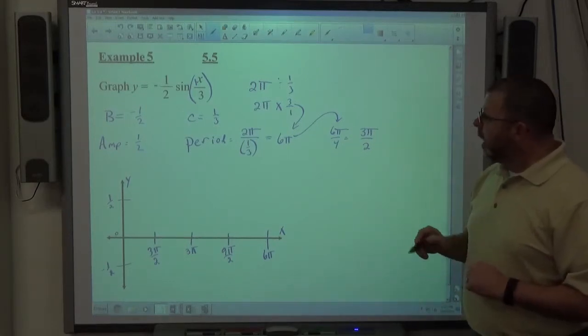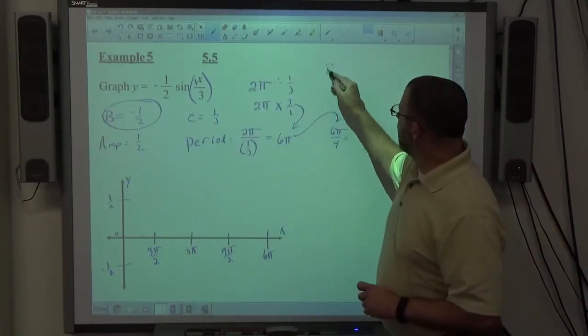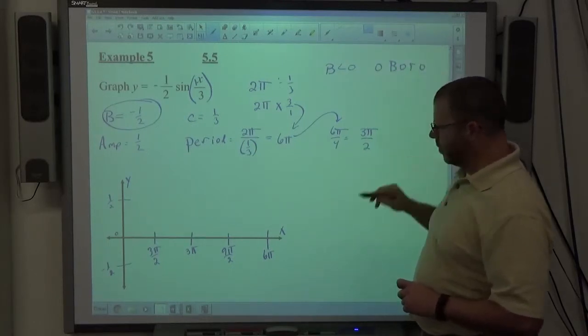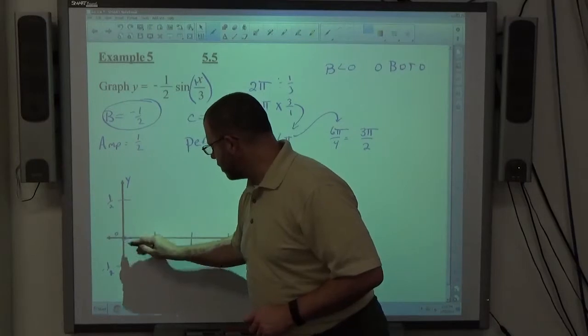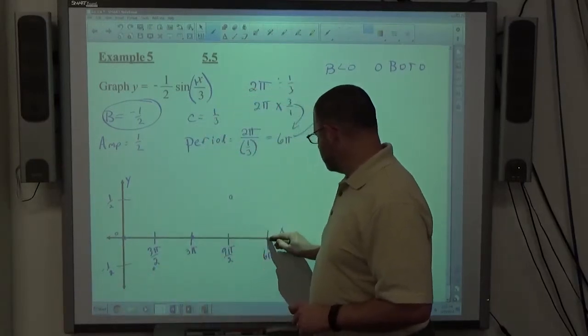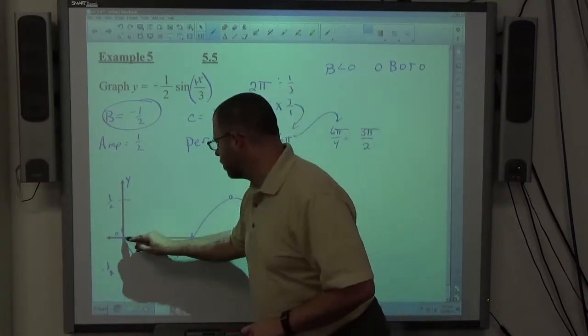Keep that in mind. I can see that B's original value is a negative value. For B less than zero, we're going to start by going zero bottom, zero top zero. So always start at zero and we go to the bottom, zero back to top, zero. So connect with a smooth curve.